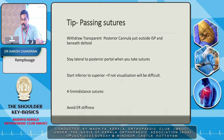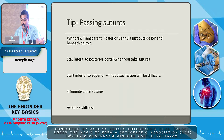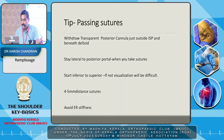Don't take too large a bite as that may cause external rotation stiffness of the infraspinatus. When passing sutures, once the anchor is placed, withdraw the cannula back and stay lateral to the posterior portal. Start inferior to superior — if not, visualization will be difficult. Maintain a 4–5mm distance between sutures, and don't take a very thick bite of the infraspinatus.